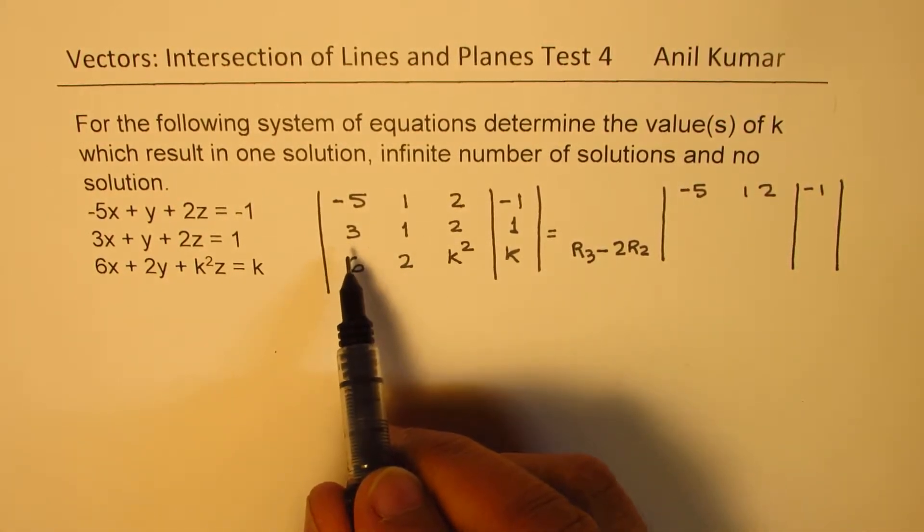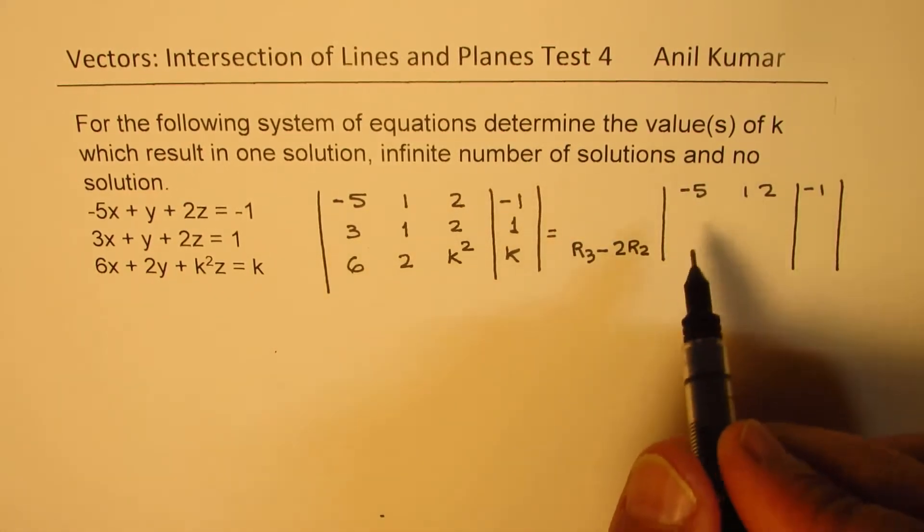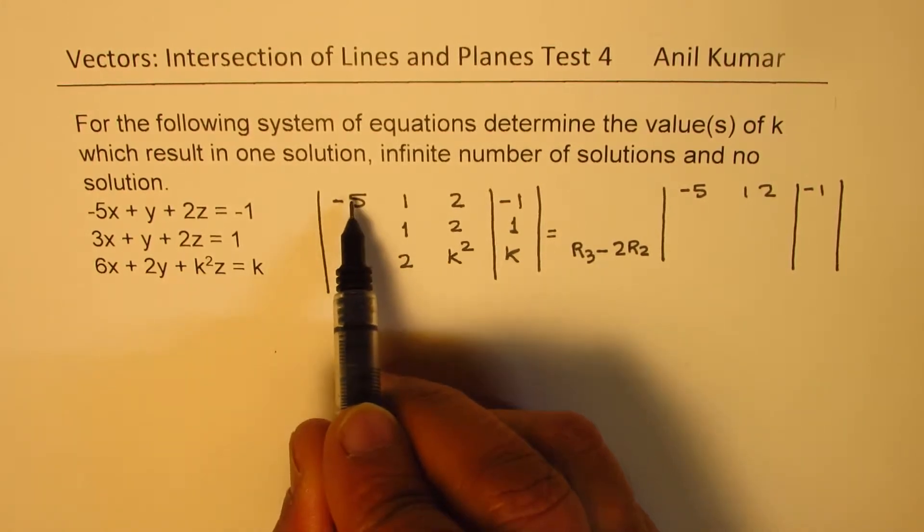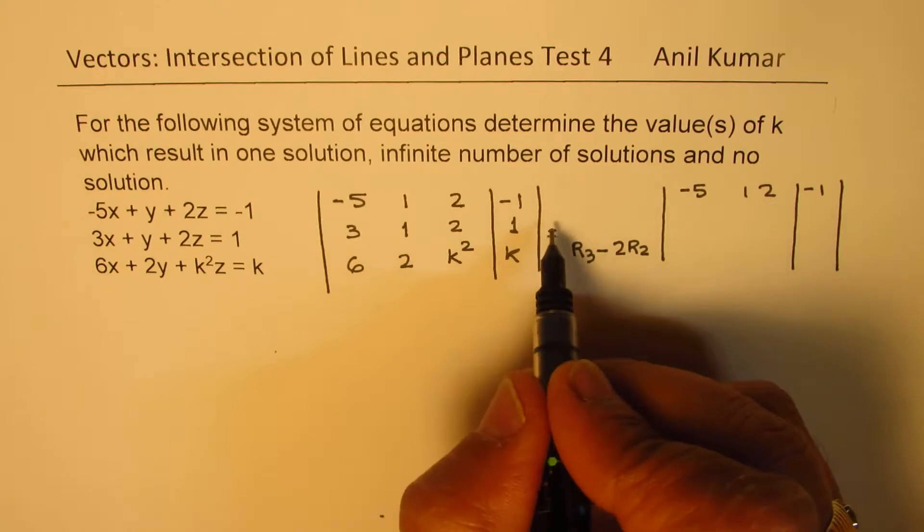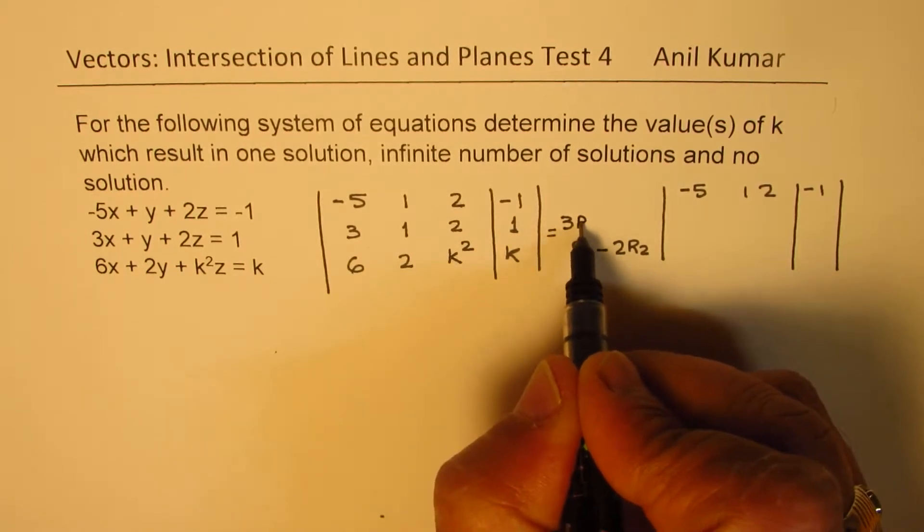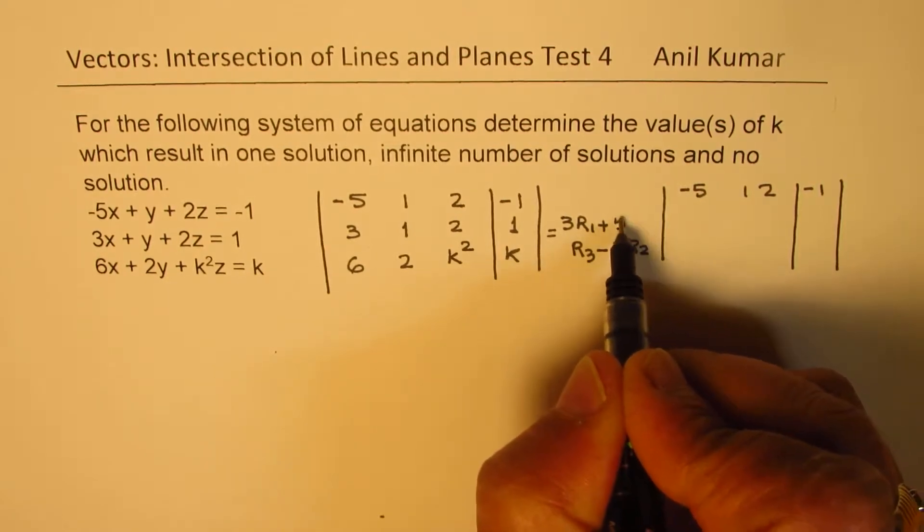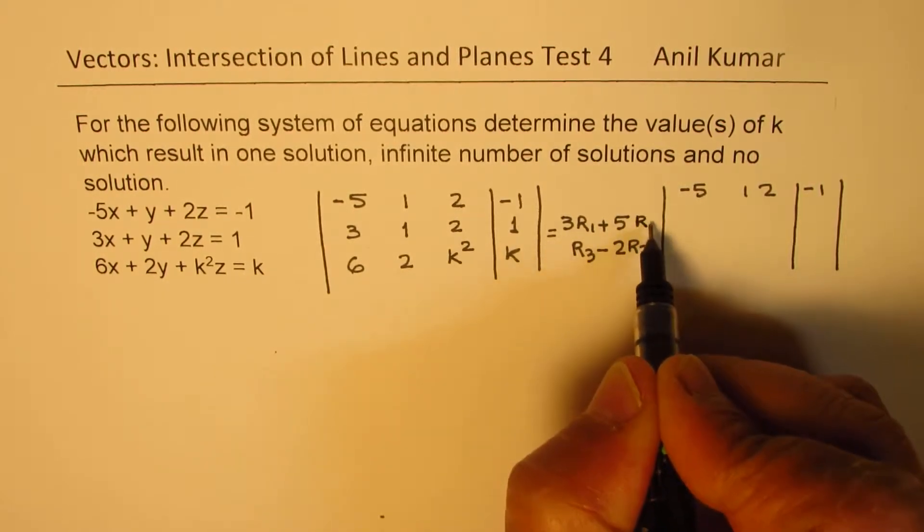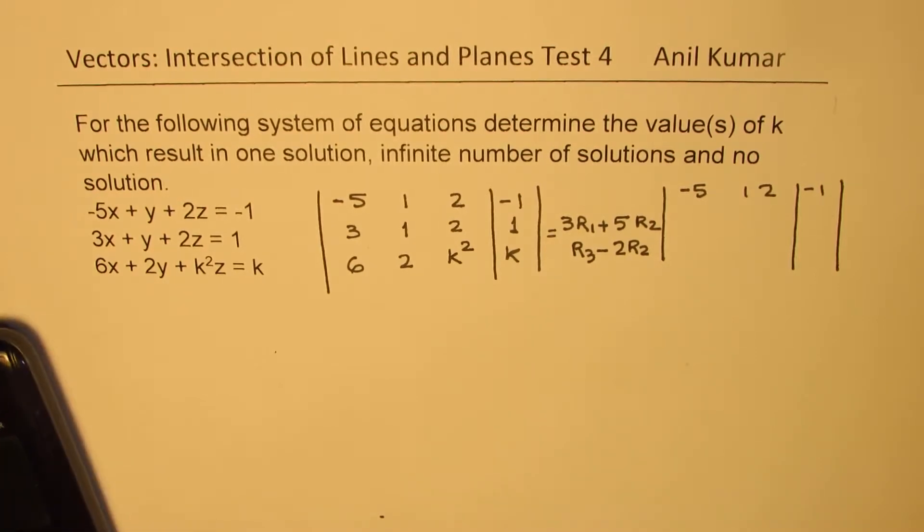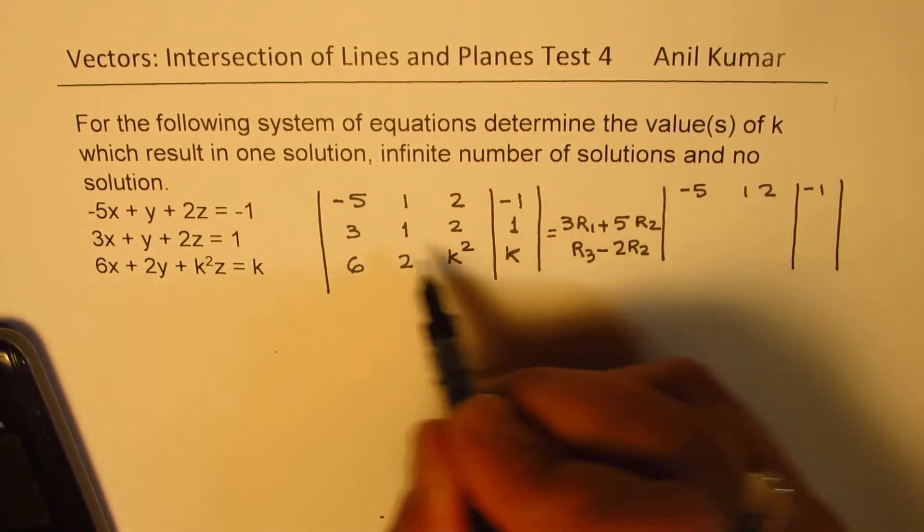We can also simultaneously make this as 0, so we'll do more calculations. To make this 0, I have to multiply that by 5 and this by 3. So what we're trying to add here is 3 times r1 plus 5 times r2. So we'll do 2 things simultaneously.